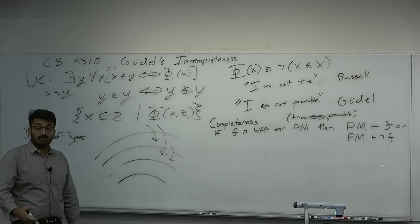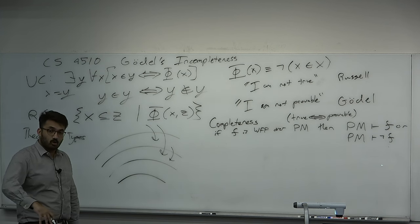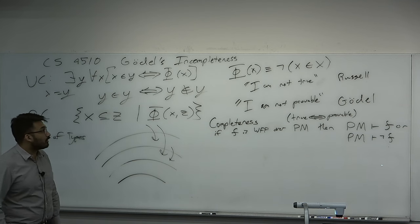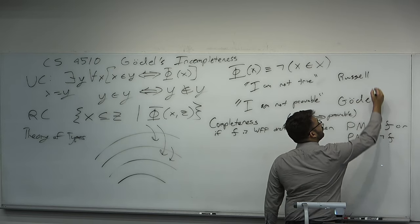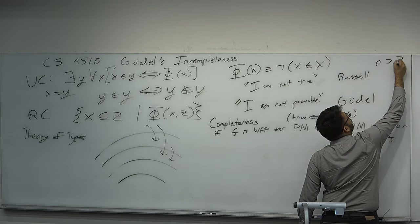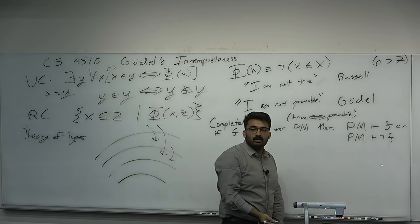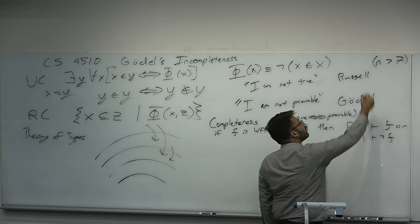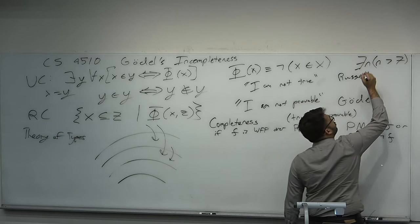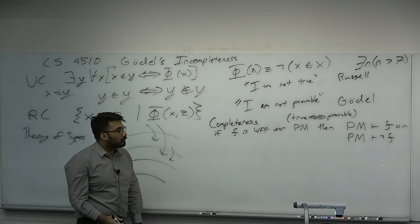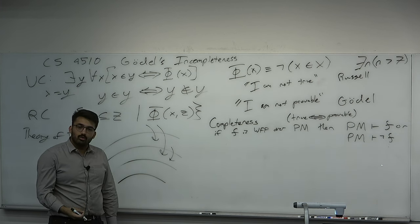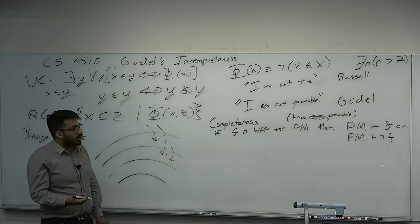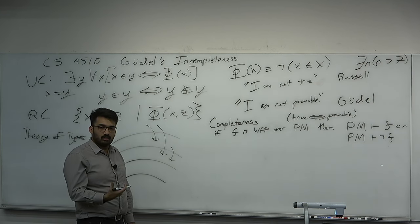By a well-formed formula here I mean a proposition — something with no free variables that may be assigned a truth value. Free variables must either be bound to quantifiers or evaluated. For example, 'n greater than 7' cannot be assigned a truth value until the variable is bound — once you say 'there exists n such that n is greater than 7,' now it can be assigned a truth value. Completeness means those statements which are true have proofs that they are true.